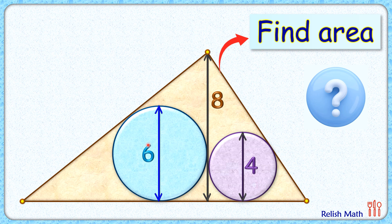This interesting question asks: the height of the triangle is 8 cm. The diameters of the blue and purple circles, which are touching the sides of the triangle and the height, are 6 cm and 4 cm respectively. With this limited data, we have to find the area of this triangle.